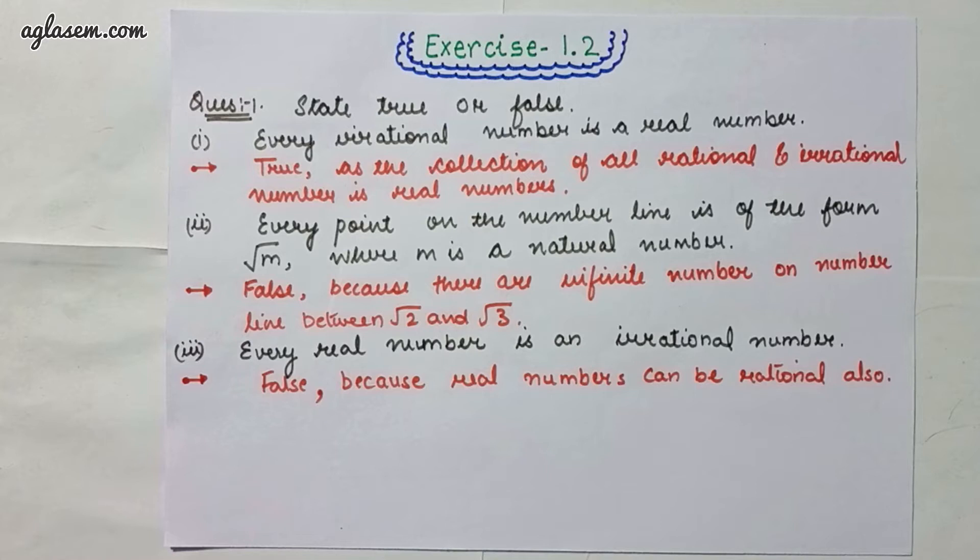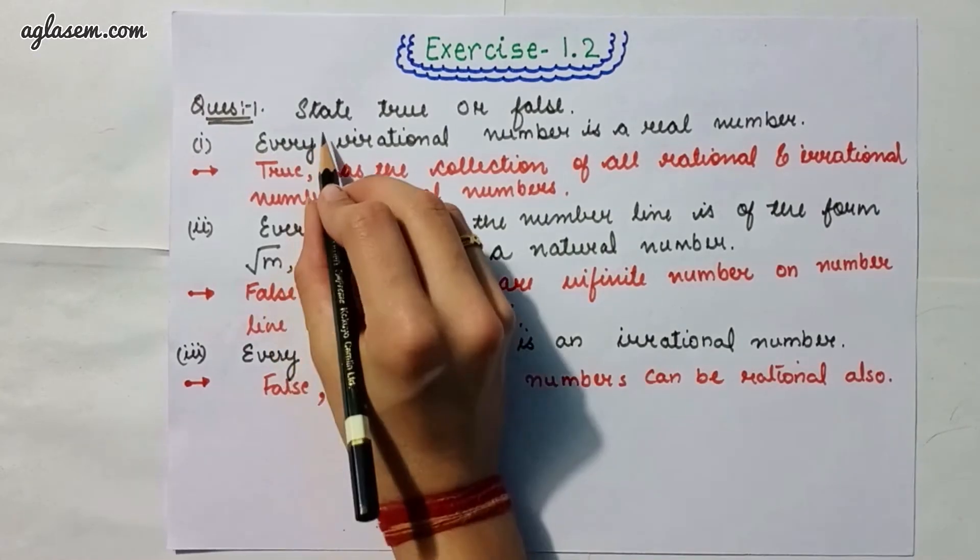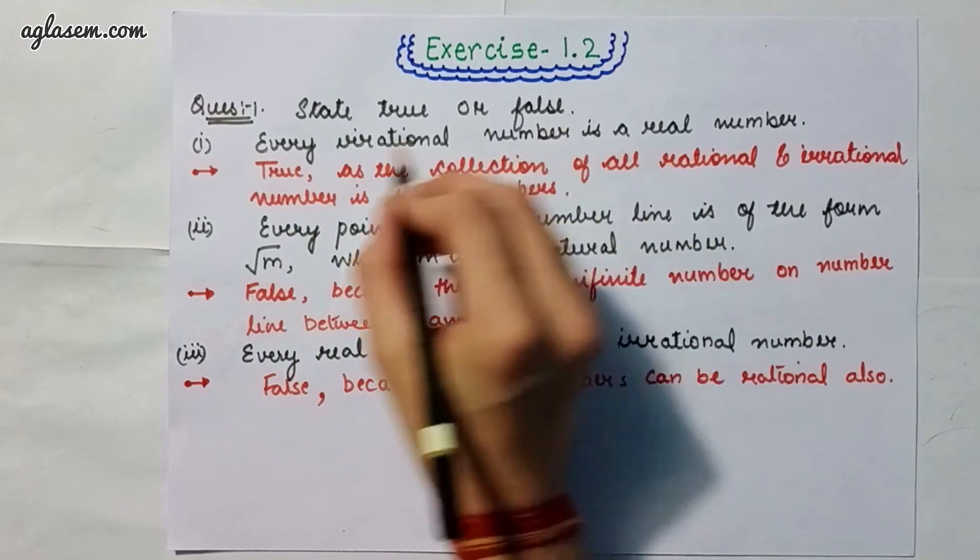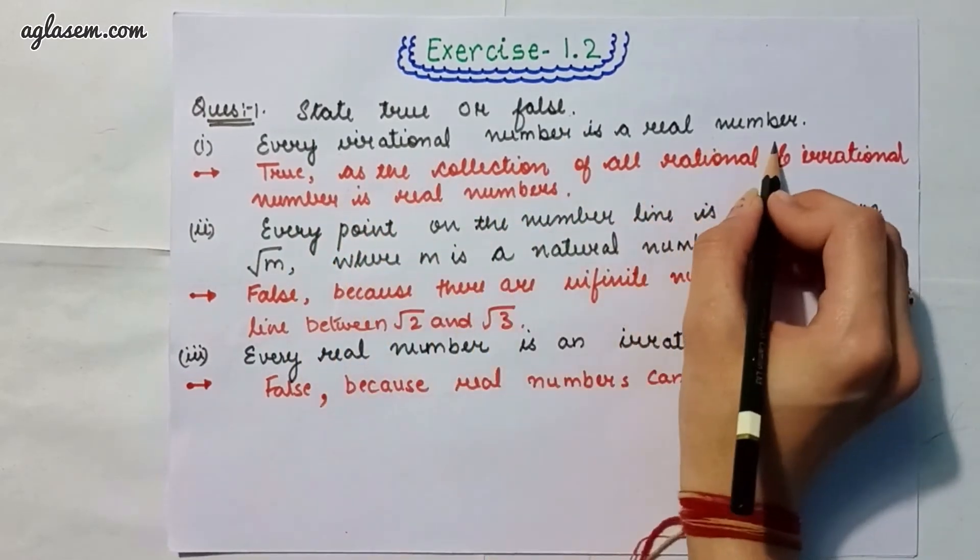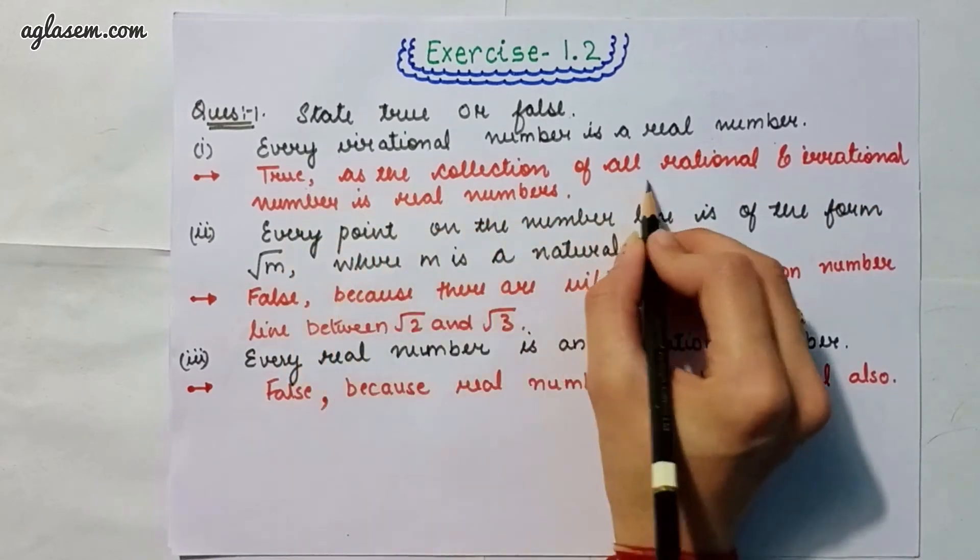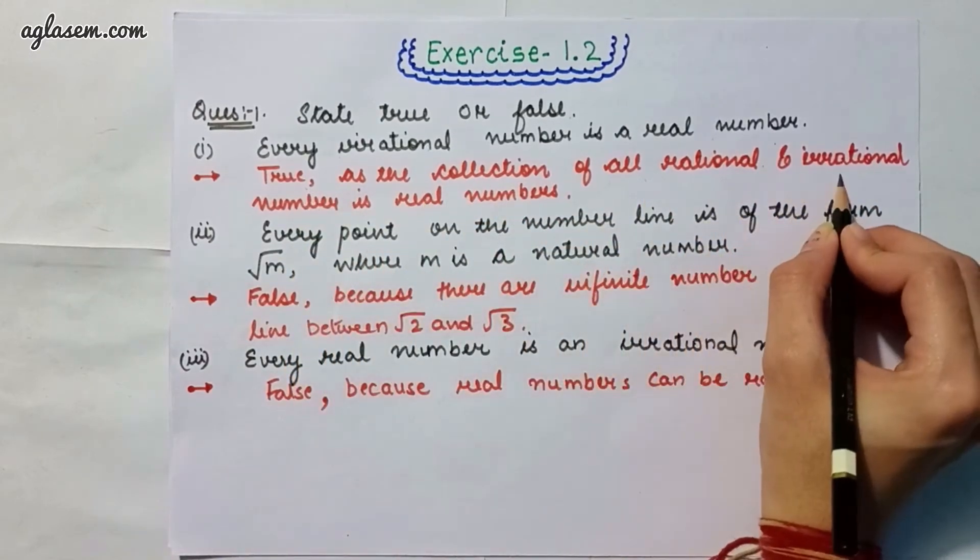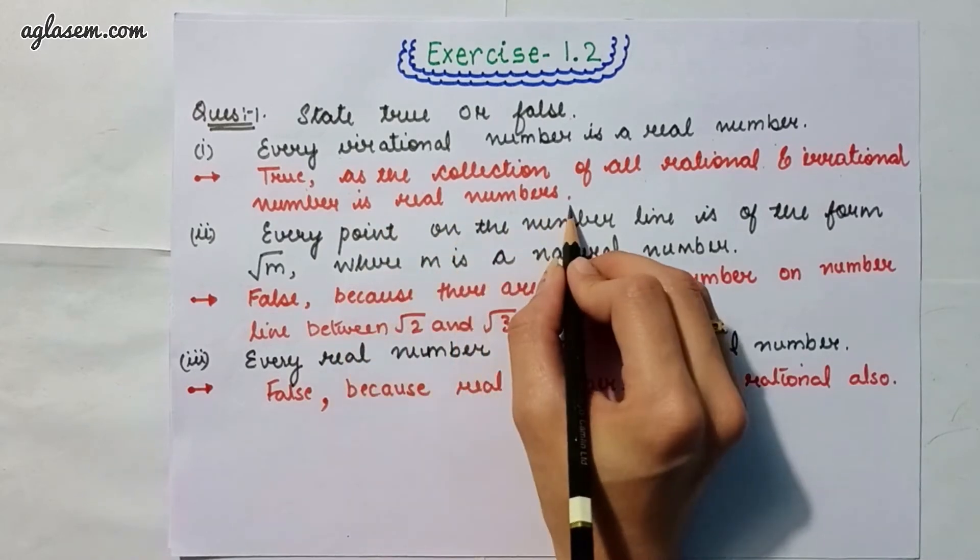Starting with exercise 1.2 which says state true or false. Part 1 says every irrational number is a real number. The answer is true, as the collection of all irrational numbers and rational numbers is real numbers.